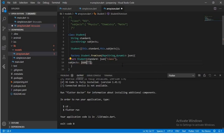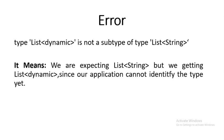You might think we are done with this, but we are not. The code we have written works for simple JSON, but now we have a list of string data type. When we run this code we will get an error: 'List<dynamic> is not a subtype of type List<String>'. This means we are expecting a List<String> but we get a List<dynamic>, since the framework cannot identify the type yet.